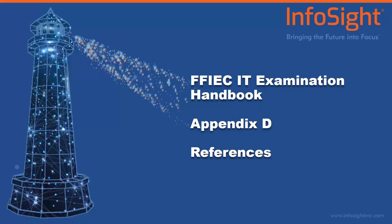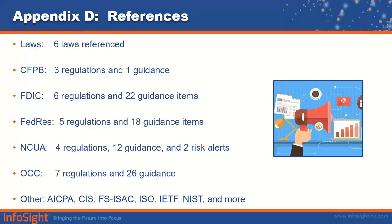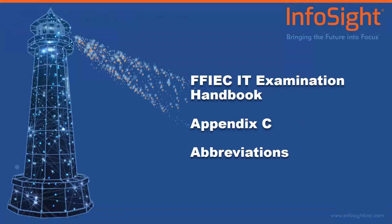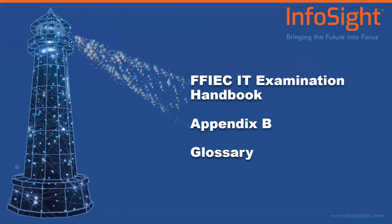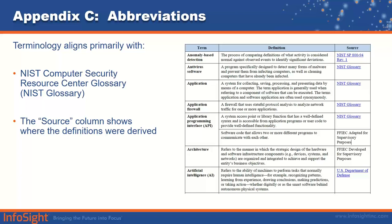Let's look at the appendices, starting with appendix D and working toward A. Appendix D contains a lot of references — FDIC, Federal Reserve, OCC — and I'd recommend reviewing those references and visiting their links for more information on each topic. Appendix C contains abbreviations and what they stand for. Appendix B is the glossary; the cool thing is that sources for the definitions are actually provided, so feel free to visit those sources if you have questions, as there's a lot of great information available through them.